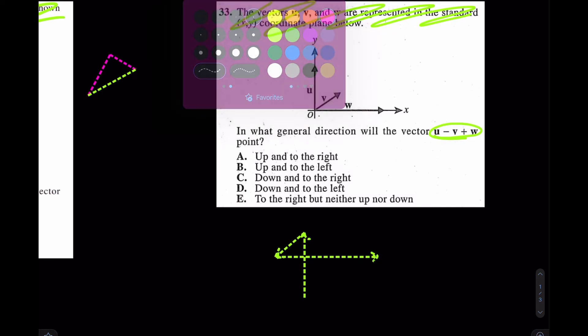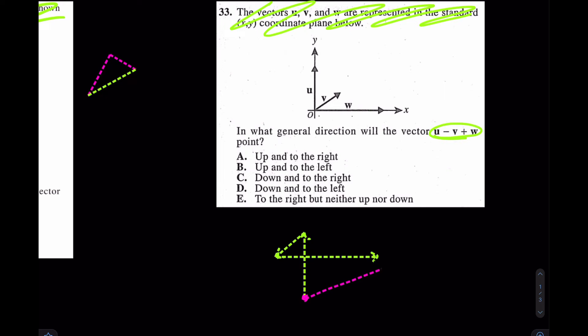instead of doing all that, what could I have just done? Well, I could have just gotten in my car and just got in that straight line like that.